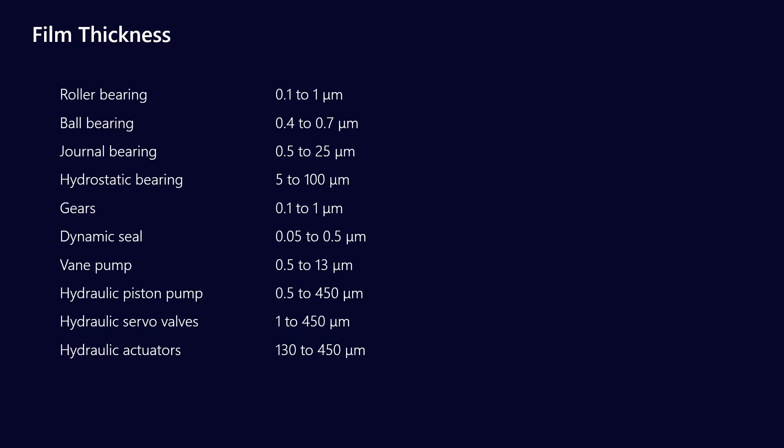It's a little different for a journal or a hydrostatic bearing. You get slightly larger film thicknesses there. But for the most part, we're talking about 0.1 to 5 microns.